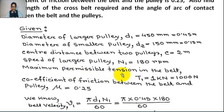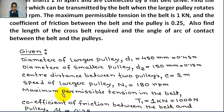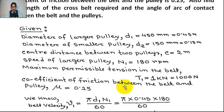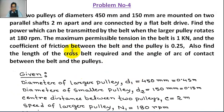Maximum permissible tension in the belt — this means tension of the belt in the tight side, because tension of the belt in the tight side is always maximum — T1 = 1 kN = 1000 N. Coefficient of friction between the belt and the pulley, μ = 0.25.